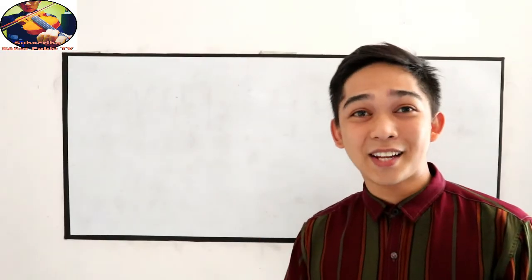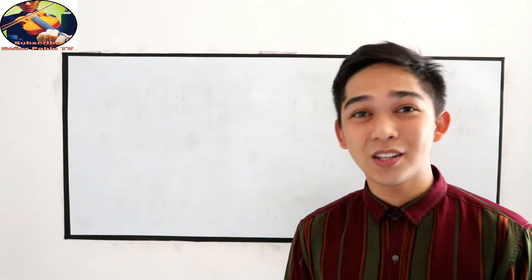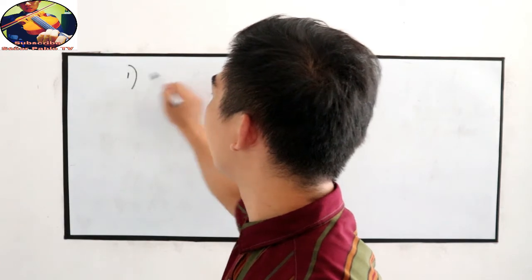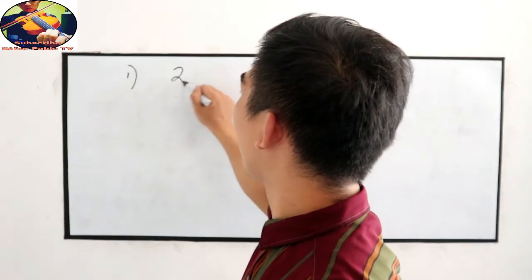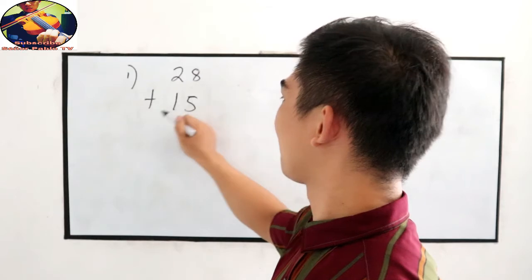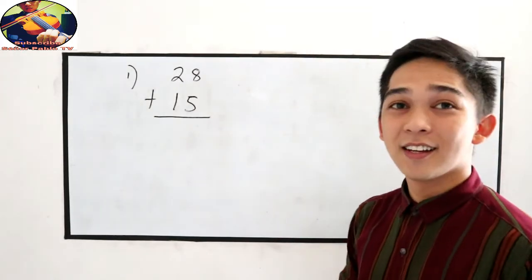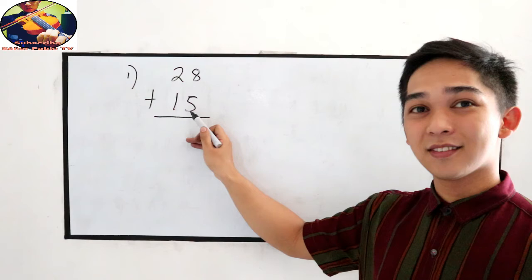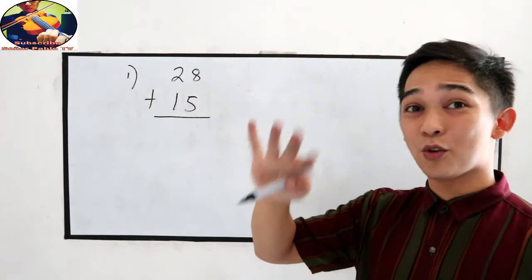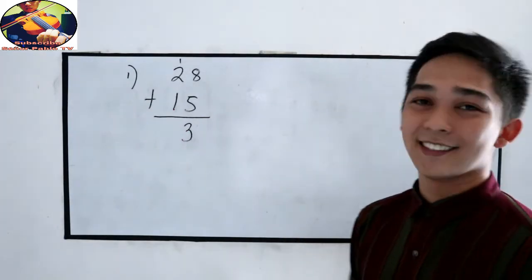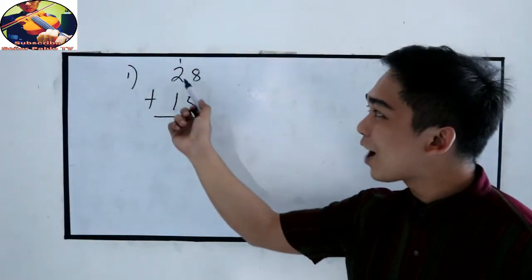And now let us try solving addition of numbers with regrouping. I have 28 plus 15. So 8 plus 5: 9, 10, 11, 12, 13. That is 13, then we need to carry 1.